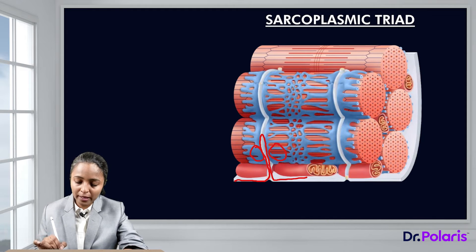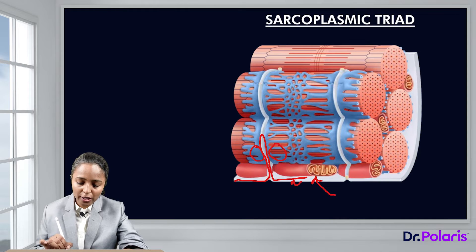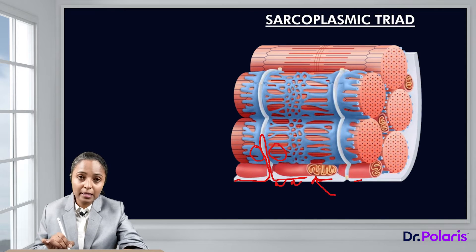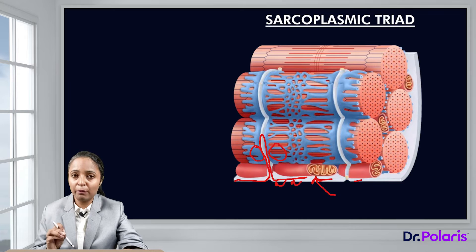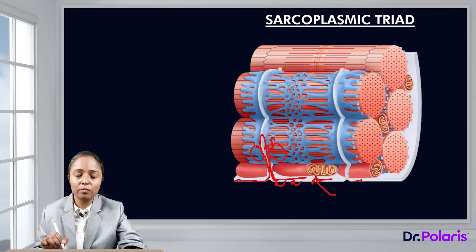When an impulse from the axon reaches the muscle fiber via the neuromuscular junction, it leads to generation of an action potential. This action potential causes a change in voltage throughout the membrane of the muscle fiber. This voltage change is carried deep into the muscle fiber by the invaginations of the muscle membrane, and it causes release of calcium from the sarcoplasmic reticulum.